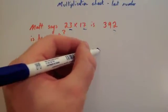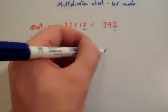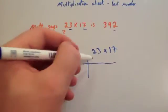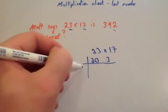So if we do 23 times 17, let's actually just use the grid method for this. 23, 17.